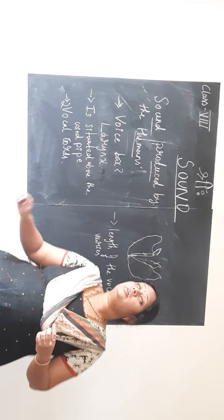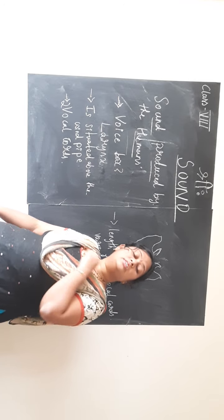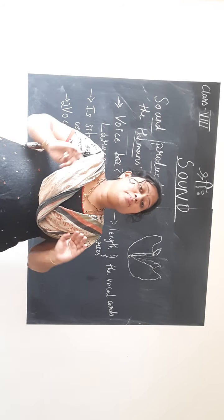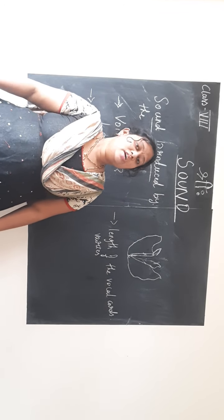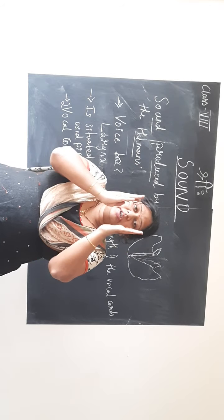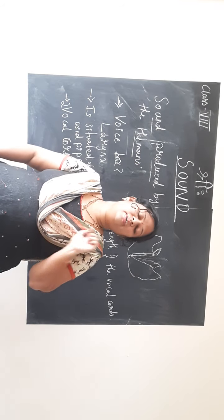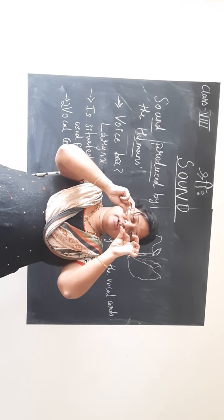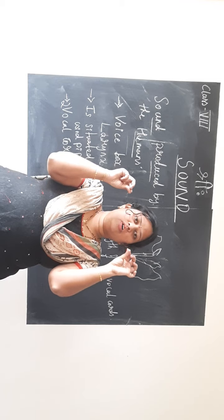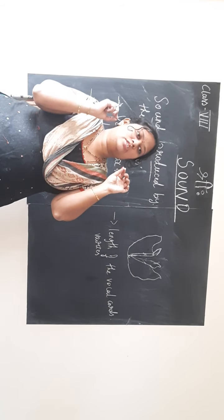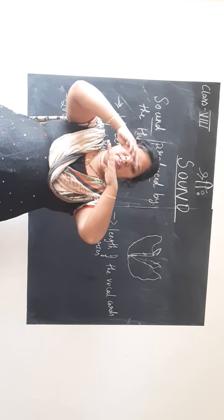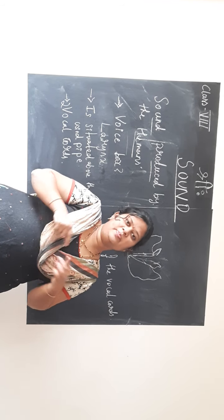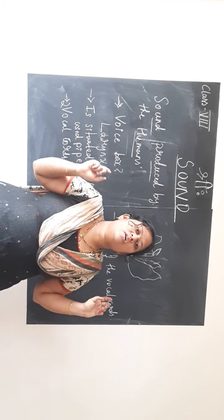Sometimes the vocal cords can be too tight or they can be loose as well. In both cases, sound is produced. To understand this concept, there is a beautiful activity: take two thin rubber-band membranes, place one upon the other, and in the space in between just talk or blow — you can hear the sound produced.